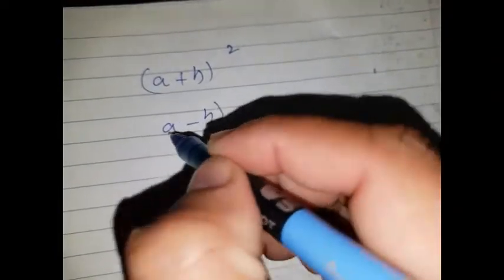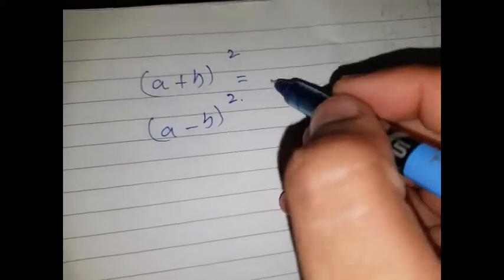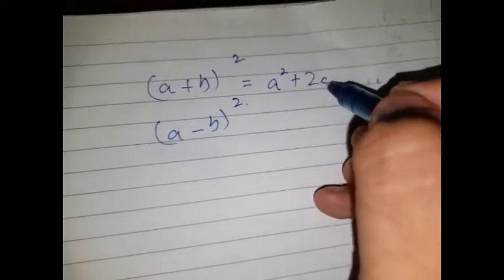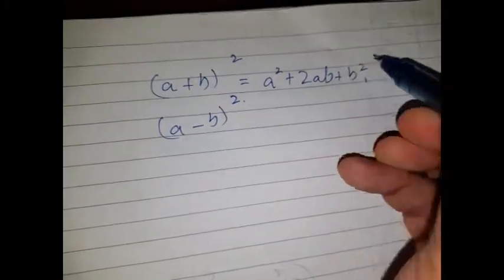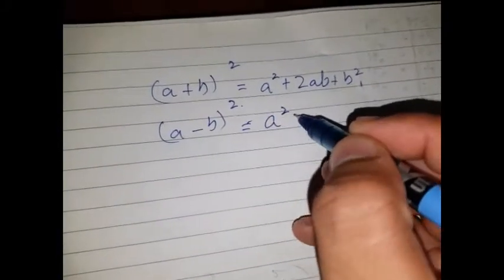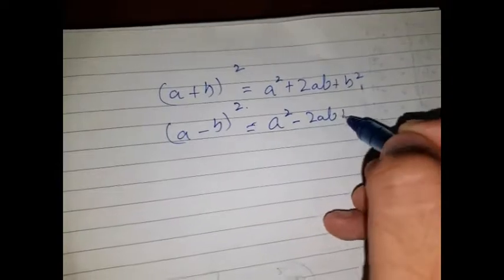The formula for (a+b)² is a² + 2ab + b². And the formula for (a-b)² is a² - 2ab + b².